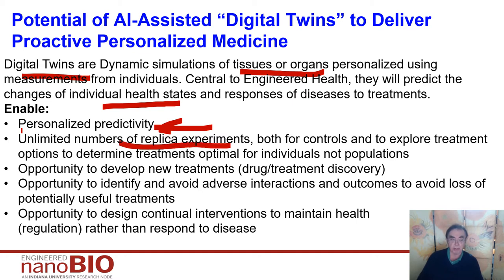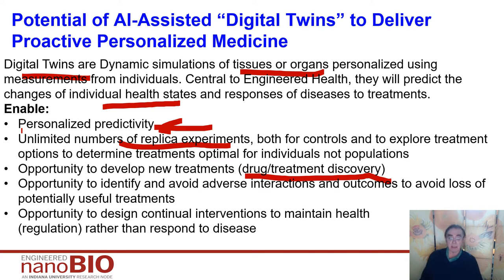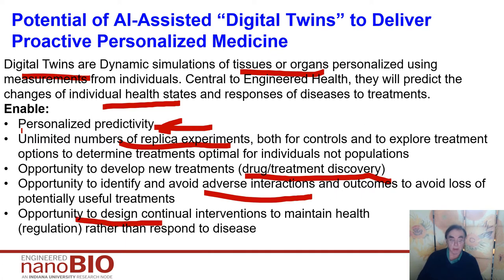We can do any number of replicas. We can discover new drugs by taking nanoparticle simulations, packaging a drug in that particle, and seeing what happens when you track it into the cell. We can avoid adverse interactions by finding out what causes them and seeing whether it's relevant for a particular patient. We can do this on an ongoing basis, because we can keep running these simulations and track our patients in time.